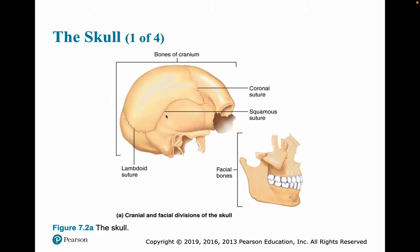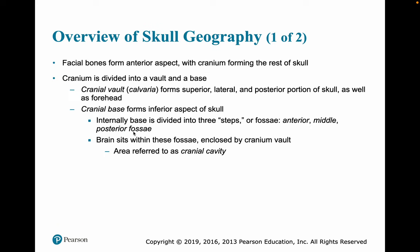Here we have the sutures: the squamous suture, coronal suture, and lambdoid suture from the side. The facial bones form the anterior aspect — the front — while the cranium forms the rest of the skull. The cranium is divided into a vault and a base. The cranial vault, or calvaria, forms the superior, lateral, and back portions of the skull as well as the forehead. The cranial base forms the inferior aspect of the skull.